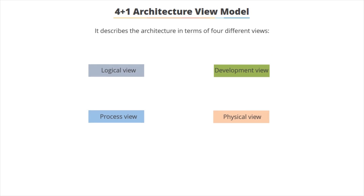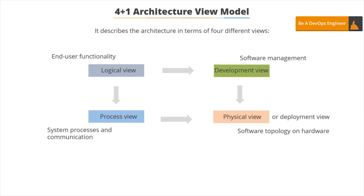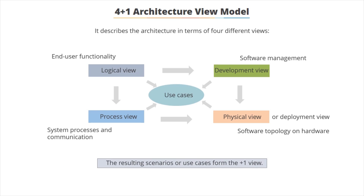Another architectural model is the 4+1 view, which is quite an interesting concept. The idea is that different people and teams have different views of systems. The logical view is how the end user sees a system in terms of its actual functionality. The development view is how developers see it — what are the actual software components and how do they interact. The process view covers what the actual processes are and how they communicate with each other. The physical or deployment view is where the software actually resides, on what hardware and in what location. The 4+1 architectural view takes these four views and generates the fifth — the 'plus 1' — which are the use cases that combine the solutions from the four views into a single unified view.